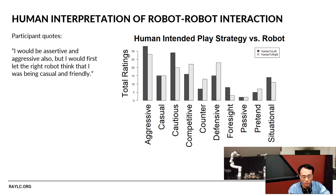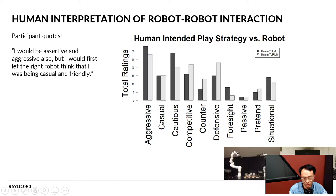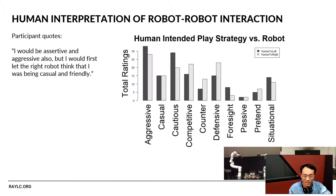People can interpret robot-robot interaction, but what about their intended strategy against particular robots? We asked how humans would react towards the left or right robot in terms of how they would actually play. Interestingly, participants said they would act more aggressively towards the passive left robot, and more defensively towards the aggressive right robot — presumably because they want to be very careful against it. They actually change their strategy of play based on the gestures the robots make, which is a very interesting new finding.